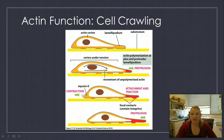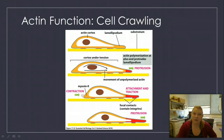There are three main steps to cell crawling, and all of these are supported by actin. The first step is the polymerization of the lamellipodia — you can see here how it starts to stick out a little bit, forming that protrusion.